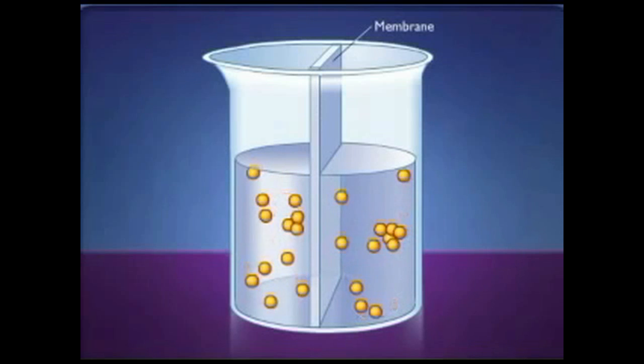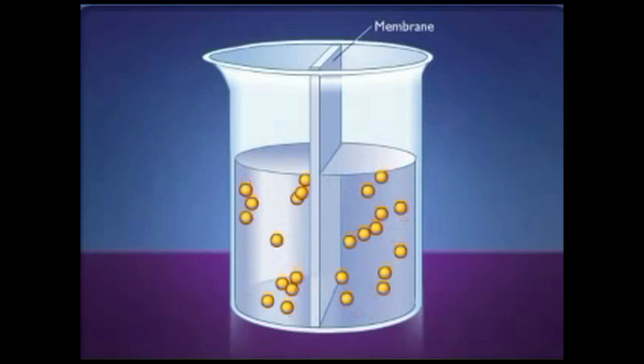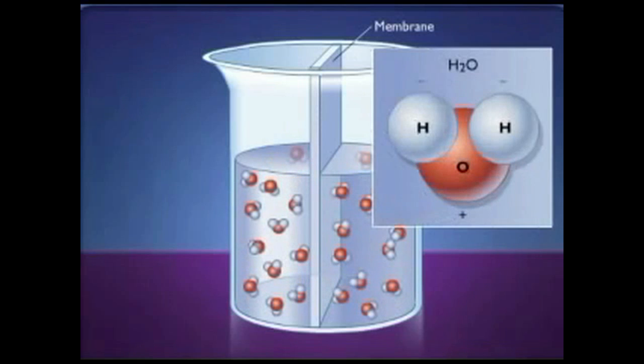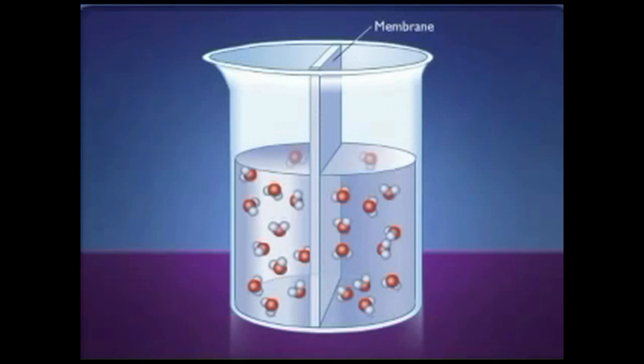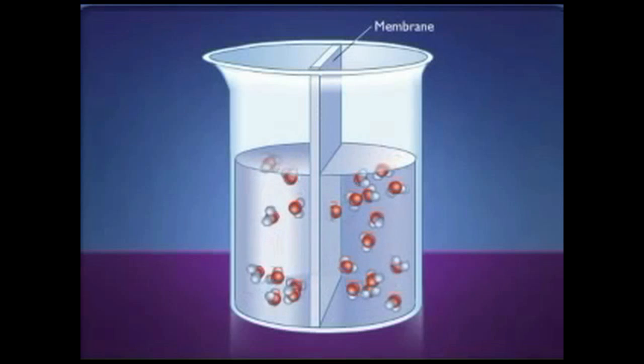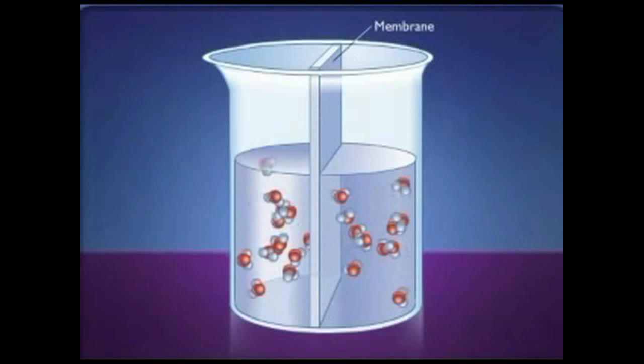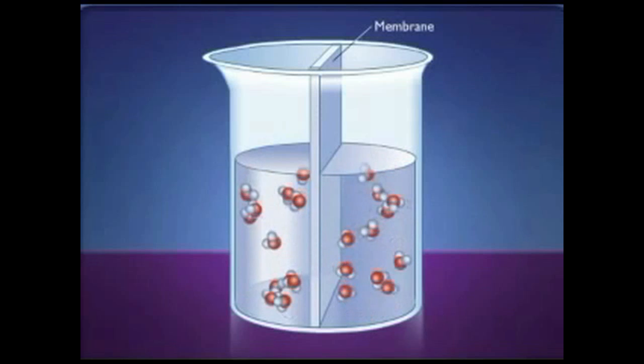Most polar molecules, such as sugars and proteins, cannot freely cross this lipid membrane. Although water molecules are polar, they are small enough to pass through the membrane freely. This special case of diffusion that involves the movement of water molecules across a membrane is called osmosis.